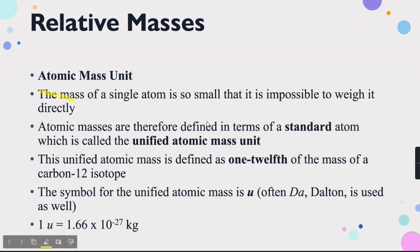The unified atomic mass is defined as one twelfth of the mass of a carbon-12 isotope. As you can see on the periodic table, carbon has a mass of 12. Whenever we are measuring the masses of these atoms, we are defining them as one twelfth of the mass of the carbon-12 isotope. This is exactly the thing you need to keep in mind.